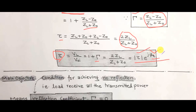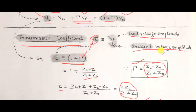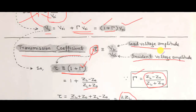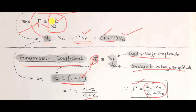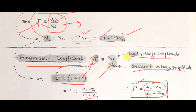In summary, the reflection coefficient is the ratio of the reflected voltage amplitude to the incident voltage amplitude, while the transmission coefficient is the ratio of the load voltage amplitude to the incident voltage amplitude.